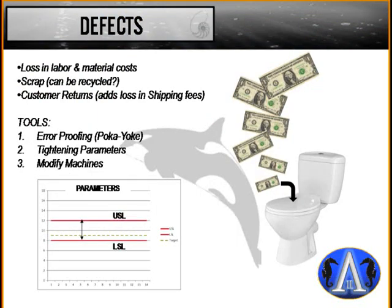Defects are a big one. There are all kinds of error-proofing methods you can implement to eliminate defects — I have a separate presentation on that. Defects result in loss of labor, material costs, scrap, rework, customer returns, and you lose shipping costs both ways. You can modify lines, tighten parameters, and modify machines. There are air-proofing methods — more on that in the follow-up presentation.